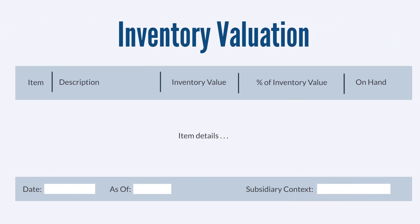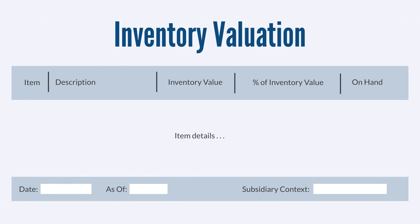The Inventory Valuation report and its corresponding detail report shows you a snapshot of the complete value of your inventory for a selected moment in time, along with the quantities of each inventory item that you have on hand at that time. This report has both summary and detail reports, allowing you to drill down into the data if you need to.